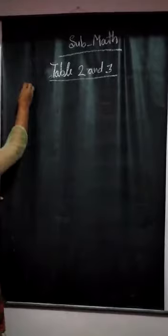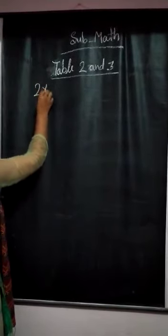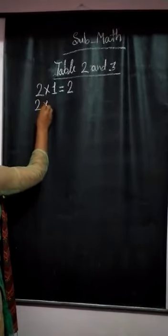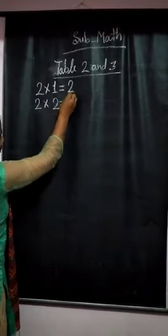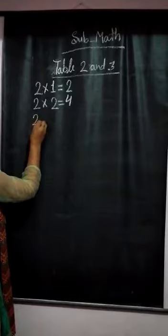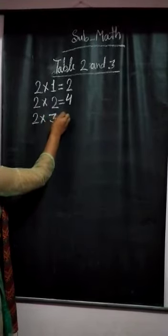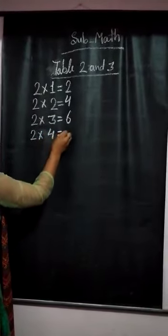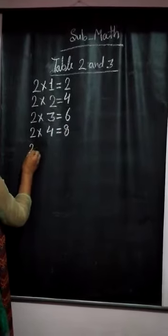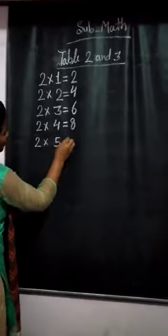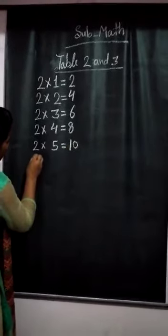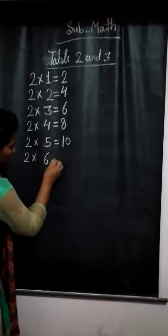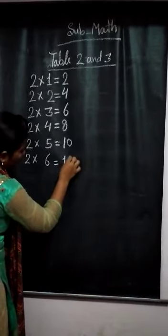So, the table of 2. 2 times 1 is 2. 2 times 2 are 4. 2 times 3 are 6. 2 times 4 are 8. 2 times 5 are 10. 2 times 6 are 12.